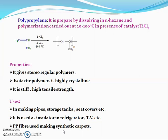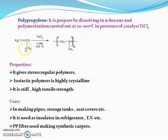The next polymer we are going to discuss is polypropylene, also abbreviated as PP. Polypropylene is prepared by dissolving in n-hexane and polymerization carried out at 20 to 100°C in the presence of titanium trichloride catalyst at 4 atmospheric pressure. The monomer of polypropylene is propylene, and the monomer of polyethylene is ethylene.